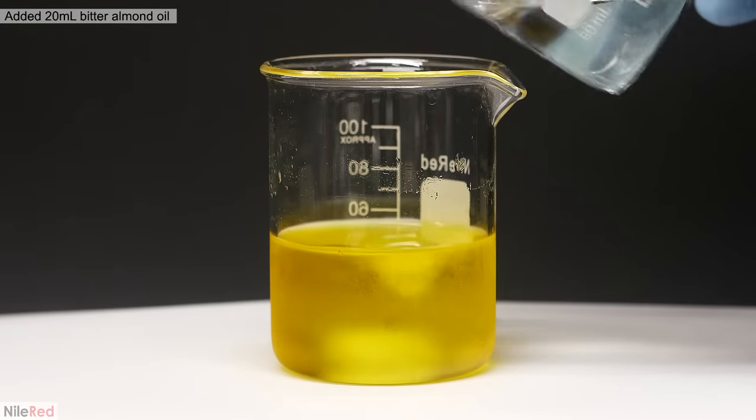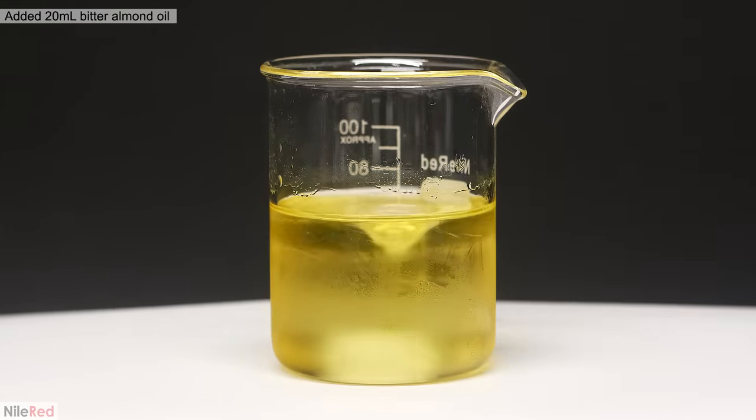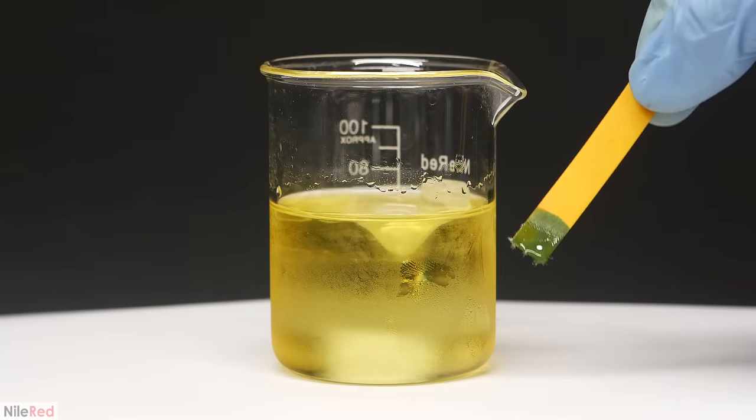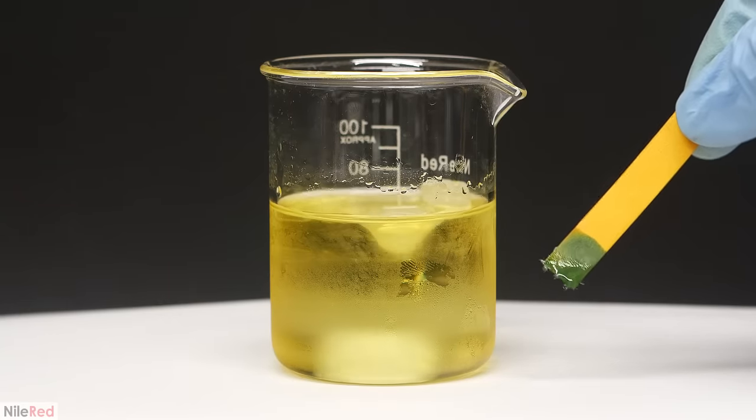When I was done adding it, I let it stir for a bit, and then I poured in 20 mils of the bitter almond oil. Before moving on, I quickly checked the pH to make sure that it was between 8 and 9. This reaction can be quite sensitive, and if it's not within this bracket, the yield would probably be affected.